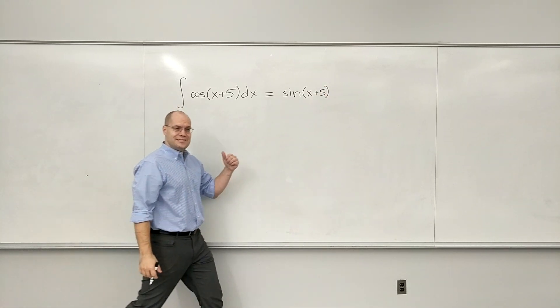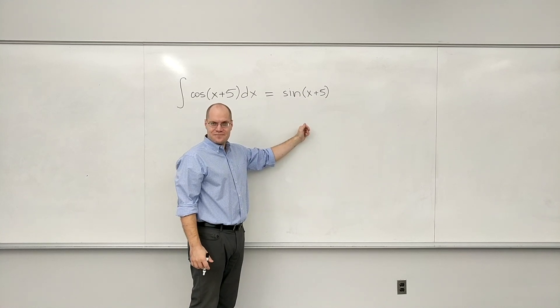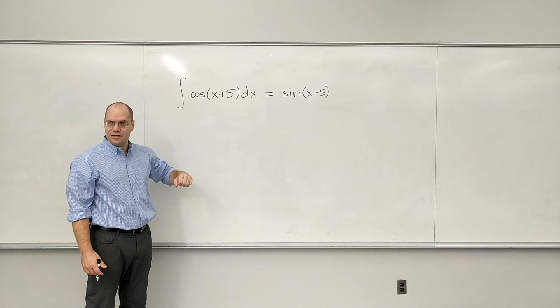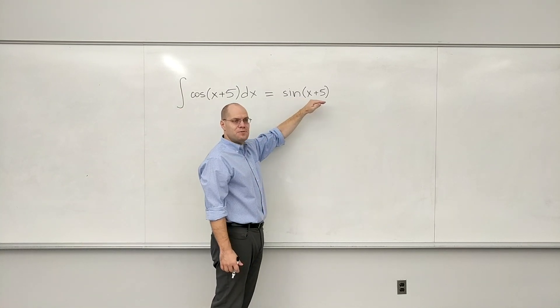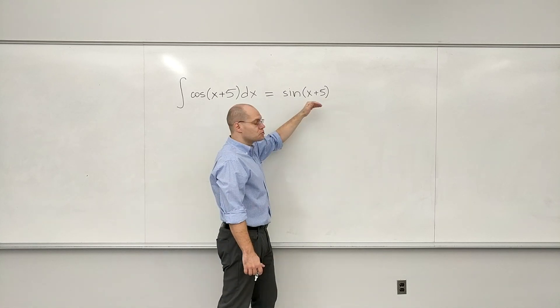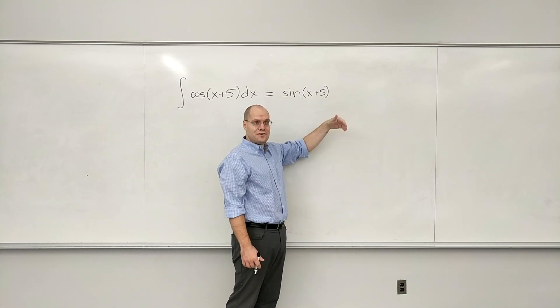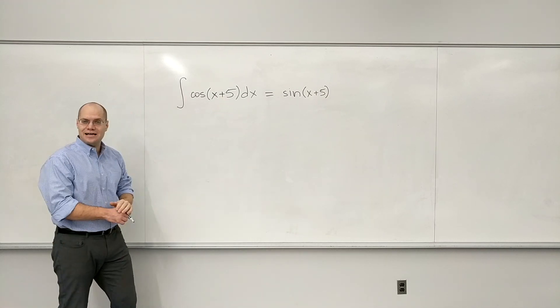And then you test your guess by differentiation. And it's almost hard to see that this is actually chain rule. Because by the chain rule this becomes cosine of x plus 5 times the derivative of x plus 5. And the derivative eats up the 5. So it just ends up being cosine of x plus 5, which is exactly what you want.